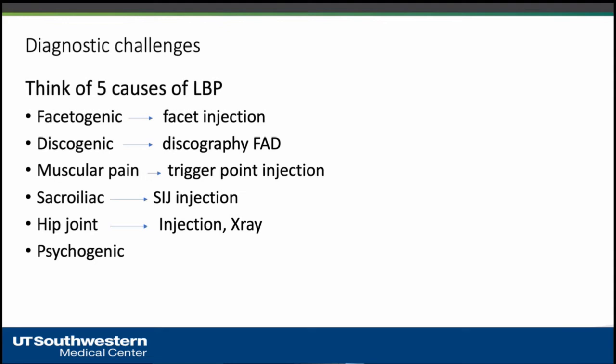The fourth cause is sacroiliac joint pain, which is the focus of today's talk. Hip pain can also cause back pain — we can send for an orthopedic surgeon or PM&R for injection and X-ray. The last cause is psychogenic pain; in the past we would do a differential diagnosis work-up, but now most of the time we send for psych evaluation.